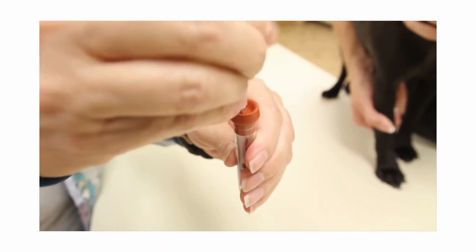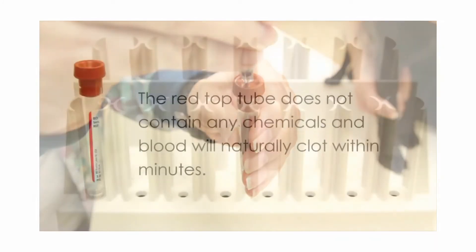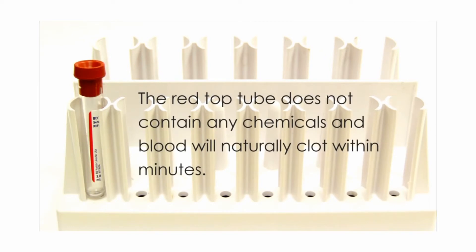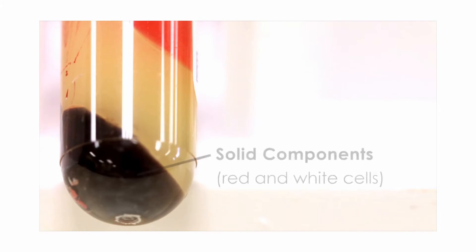The other tube that is quite commonly used is the red-topped tube. This tube does not contain any chemicals and therefore blood will naturally clot within several minutes after collection. Blood contains solid components, mainly red and white blood cells, and a liquid component called serum.